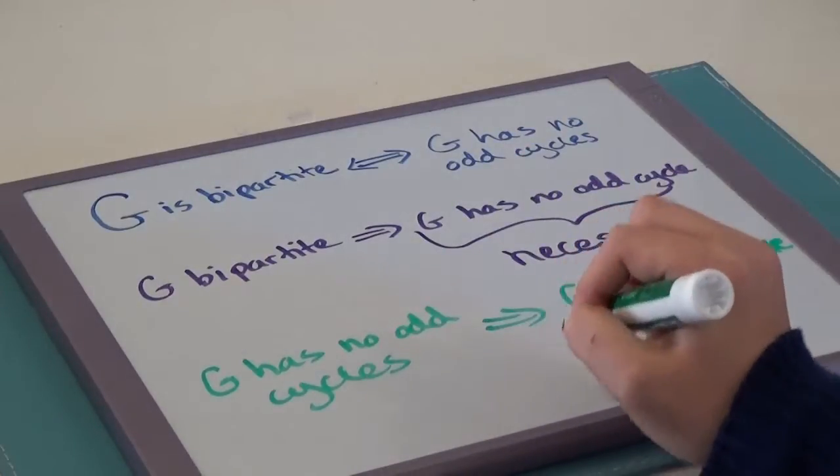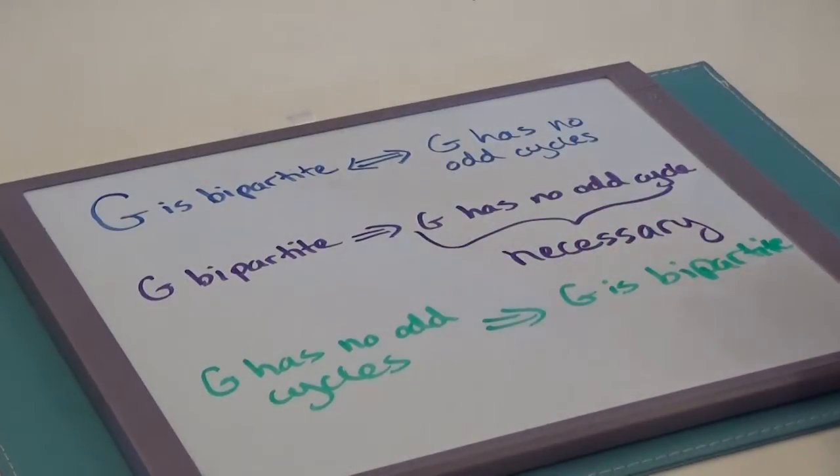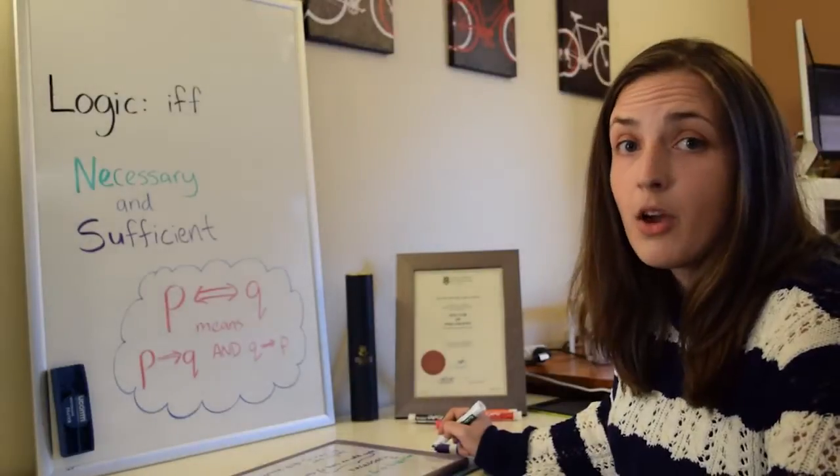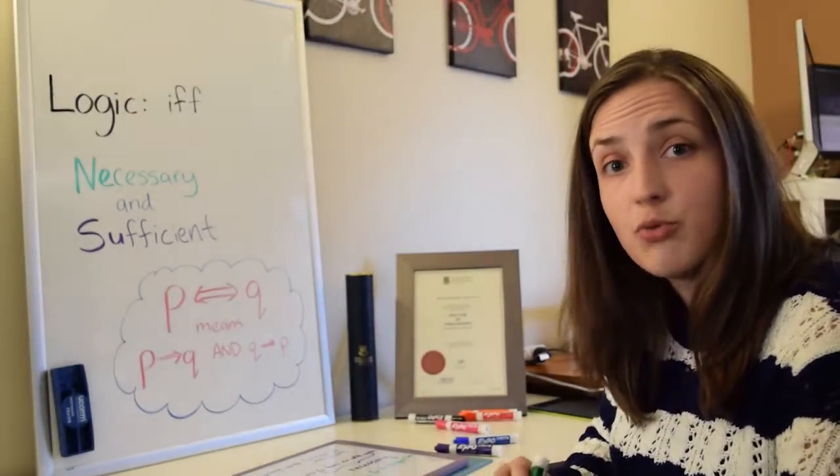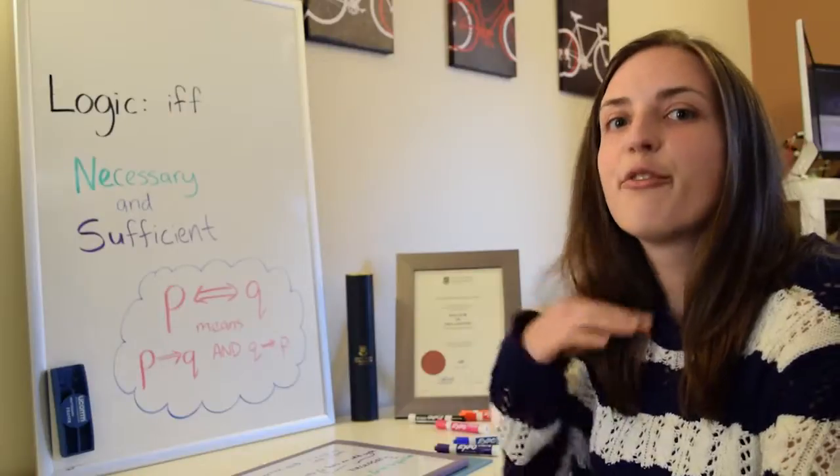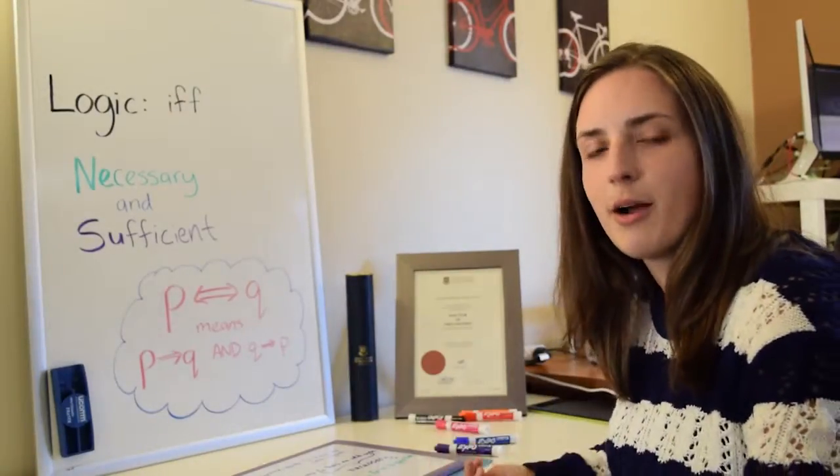If G has no odd cycles, then G is bipartite. What does that mean? Well, it means that as long as you know that G has no odd cycles, that is sufficient to tell you that it's bipartite.